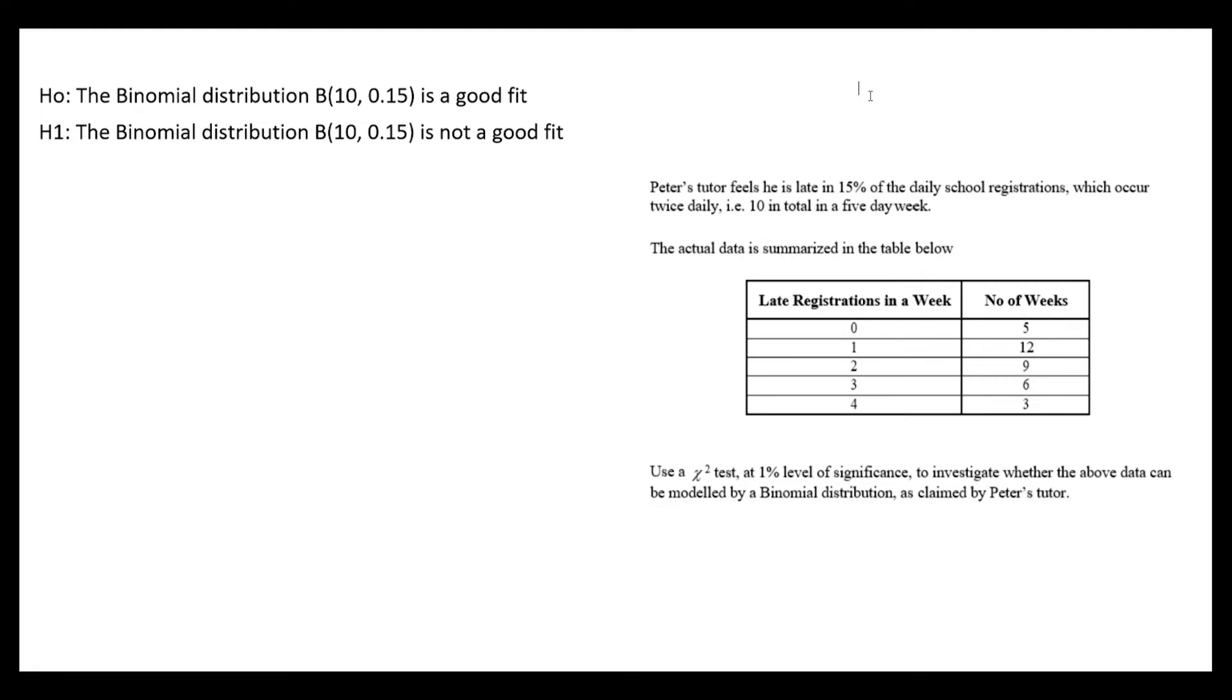In this question, we're told that Peter's tutor feels he's late in 15% of the daily school registrations, which occur twice daily - a morning registration and an afternoon registration - making a total of 10 in a five-day week. The data is summarized in the table below. We're asked to use a chi-squared test at a 1% level of significance to investigate whether this data can be modeled by a binomial distribution.